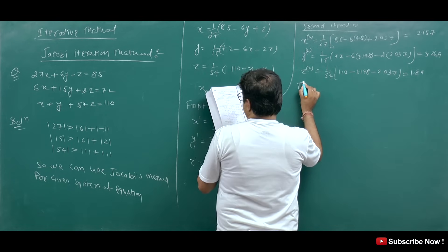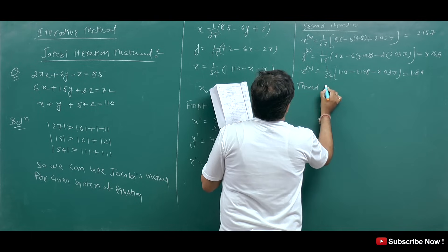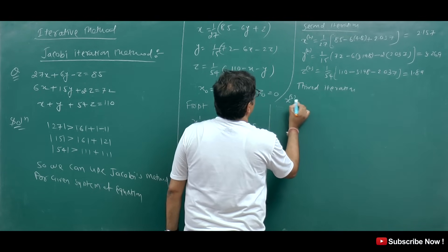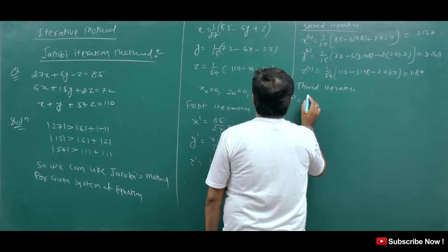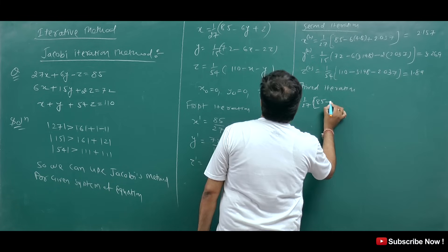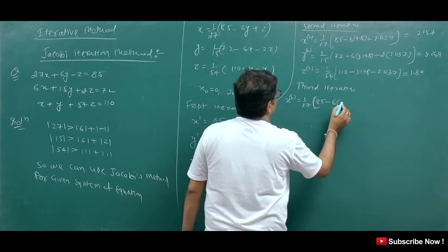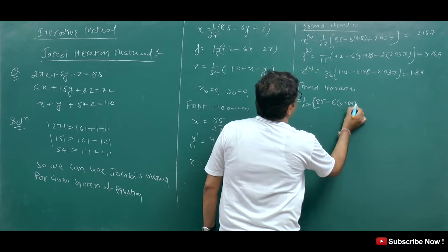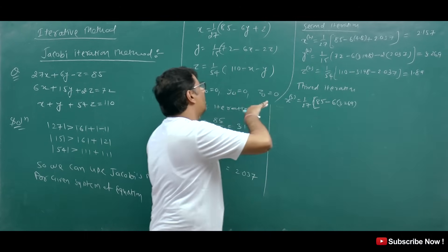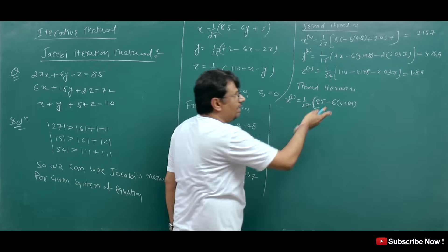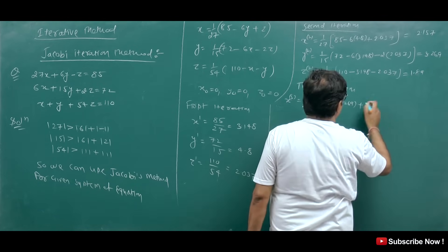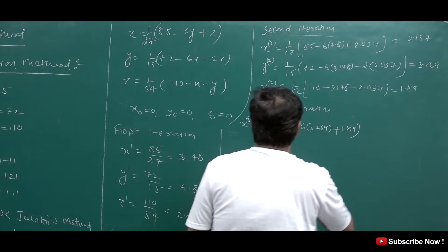Now the third iteration. We substitute the second iteration values: x₃ using y₂ = 2.157 and z₂ = 1.89. After calculating the third iteration, the values come out as x₃ = 2.492, y₃ = 3.685, and z₃ = 1.937.